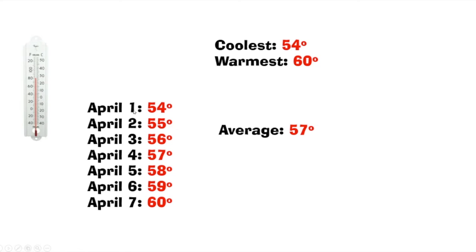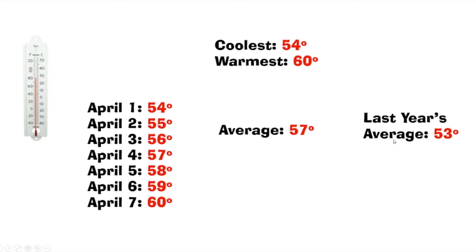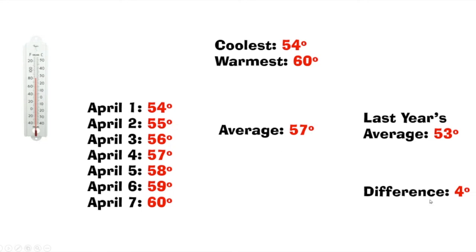Average means the middle number of those seven days. How we calculate that is we add up these numbers — 54, 55, 56, 57, 58, 59, 60 — and divide them by seven because there are seven days, and we get 57 degrees. We can use this information and tell someone the average temperature of the first week of April was 57. We can also take this information and compare it to last year's average temperature. Let's say last year at this time it was 53. Now we can say that the difference — how different they are — is four degrees Fahrenheit. Information can be changed from one type to another type to another, and it all depends on what you want your code to do.